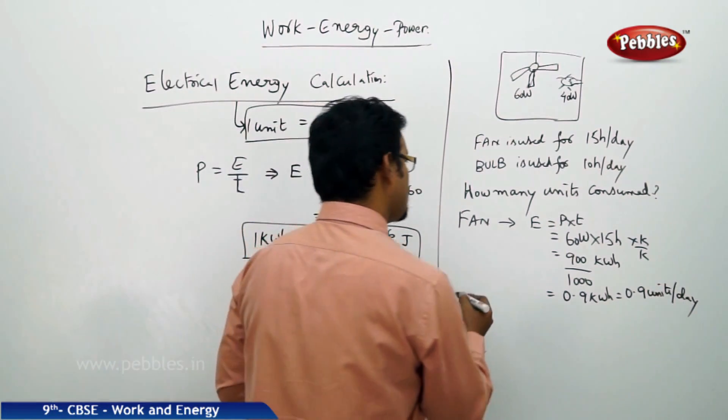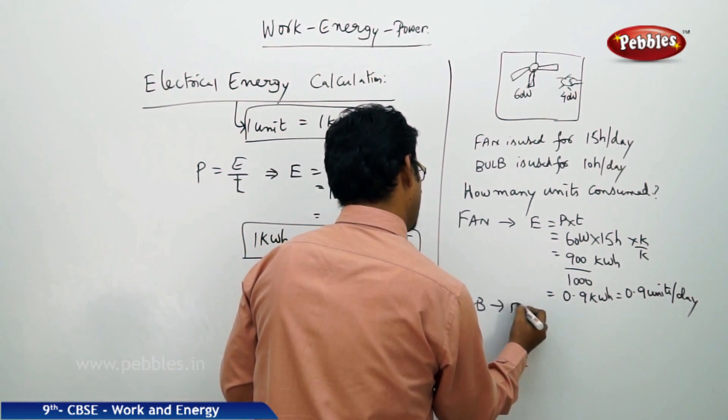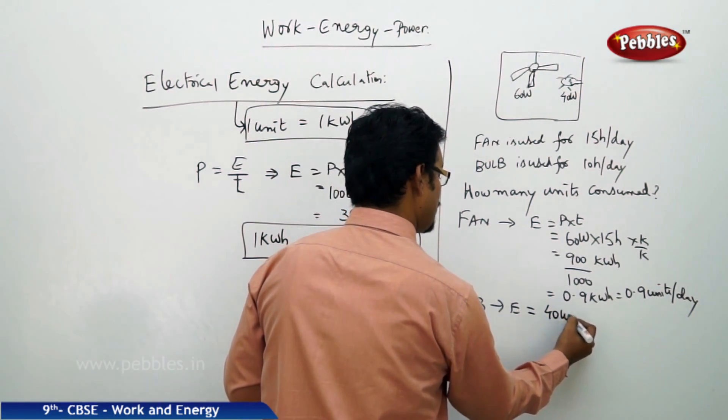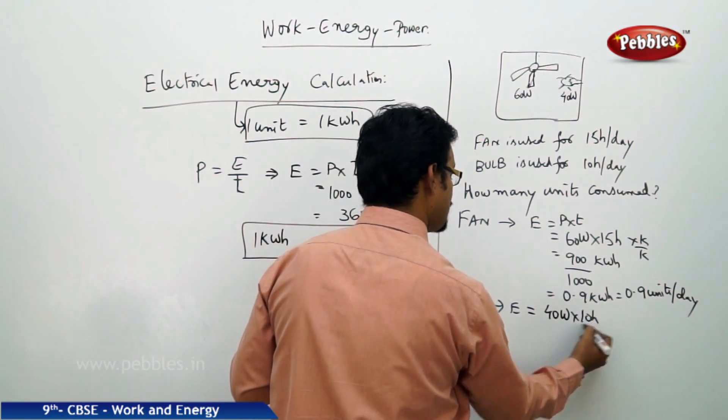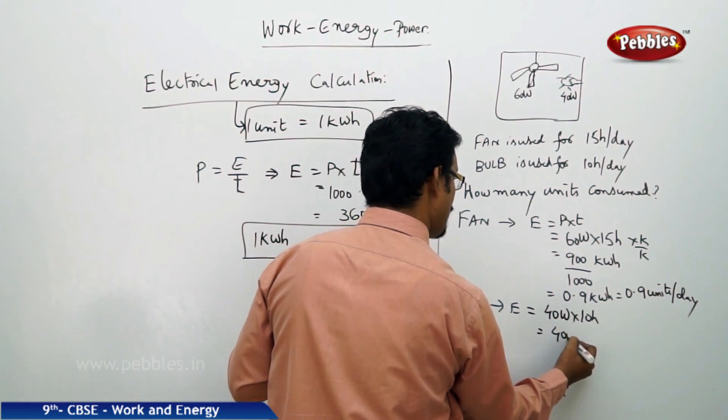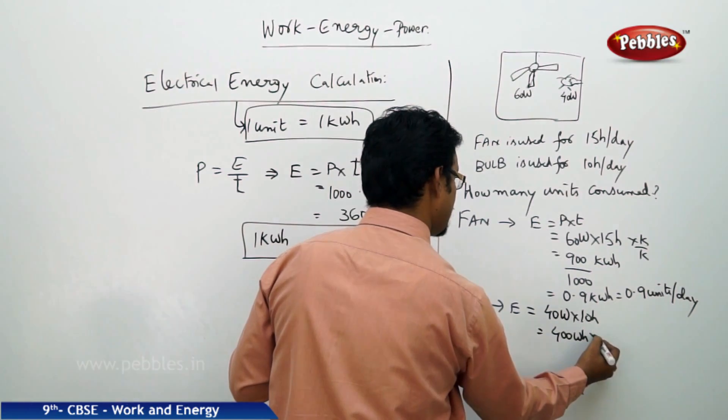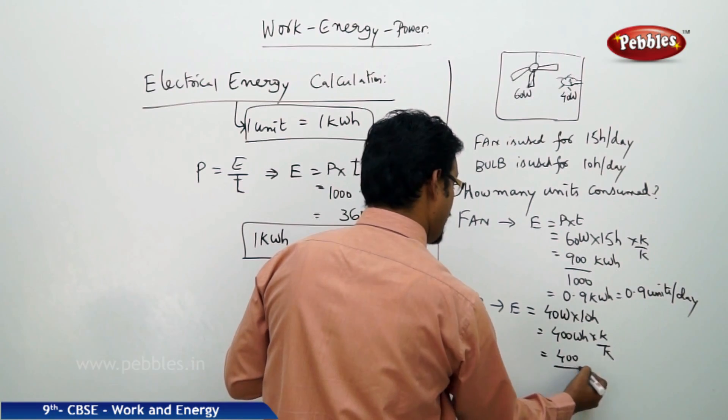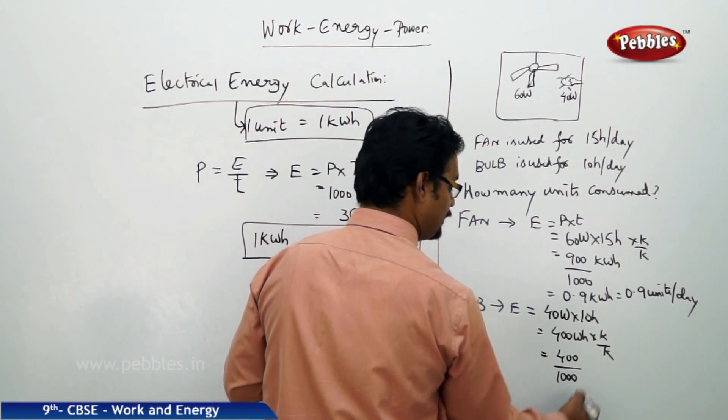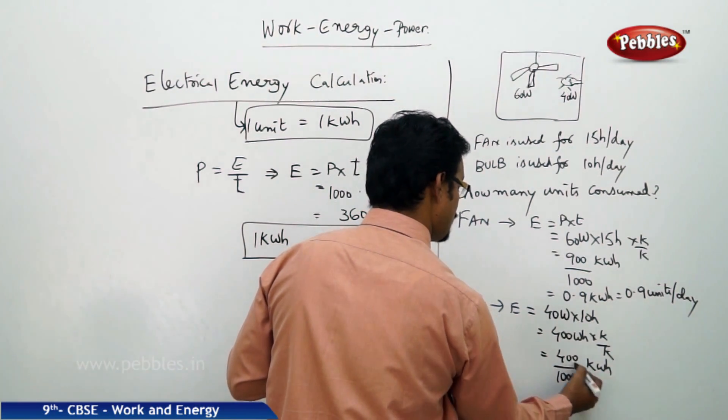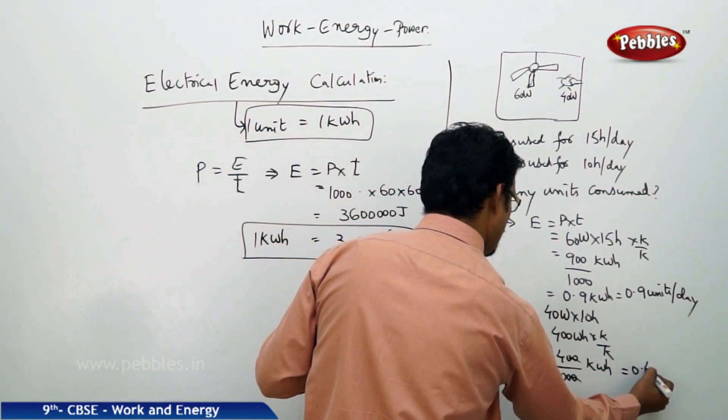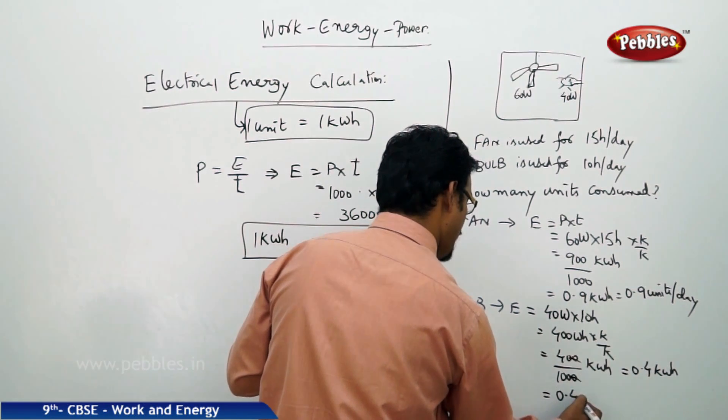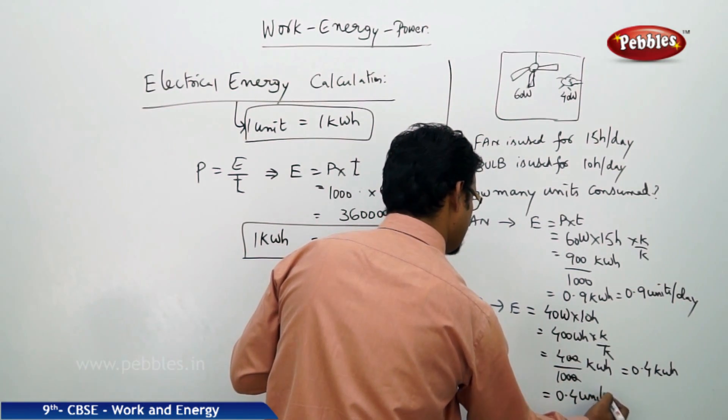Apply the same concept for bulb. So energy equals the bulb power is 40 watts and used for 10 hours per day. So this is 400 watt hour into K by K. So 400 by 1000 kWh. So 0, cancel, so it is nothing but 0.4 kWh. So how many do you have consumed, 0.4 units per day.